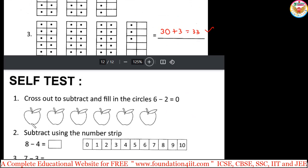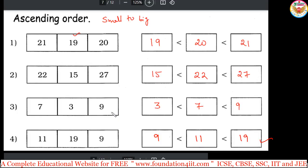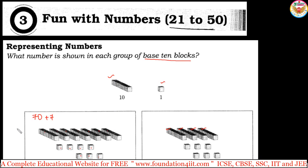And last page you have the self-test, so around 10 questions, first 2, 3 I will show you. Cross out to subtract and fill in the circles, 6 minus 2. I am not telling the self-test you have to do this. Subtract using the number strip, you can do this. This is about third chapter, fun with numbers 21 to 50. From the PDF by doing you can learn and practice, let us go for the next chapter.